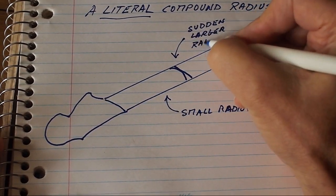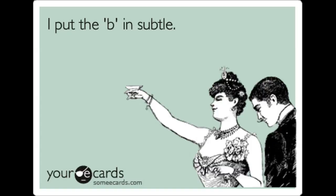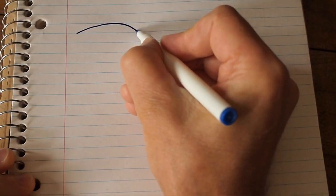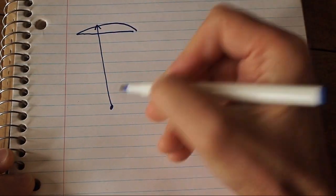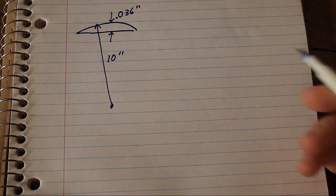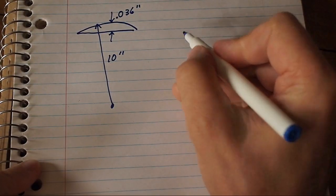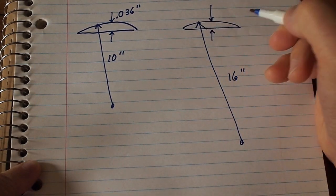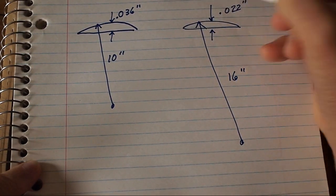The effect of a compound radius fingerboard is actually quite subtle. It's not like going from a broom handle to a 2x4. A 10 inch radius neck has a crown that's about 36 thousandths of an inch higher than the fretboard edges down at the nut. That's the thickness of an A string. Now if that same guitar has a 16 inch radius, the crown is about 22 thou above the edges of the fretboard.